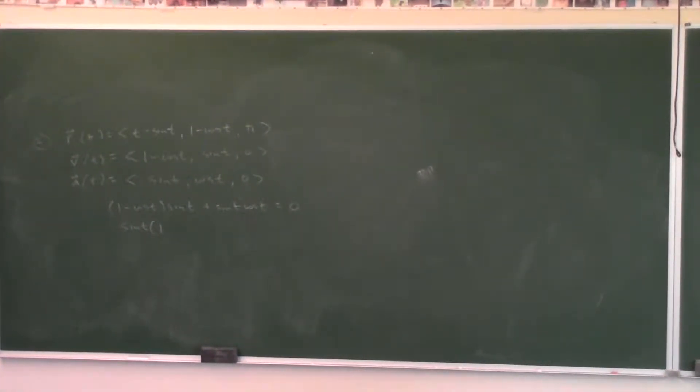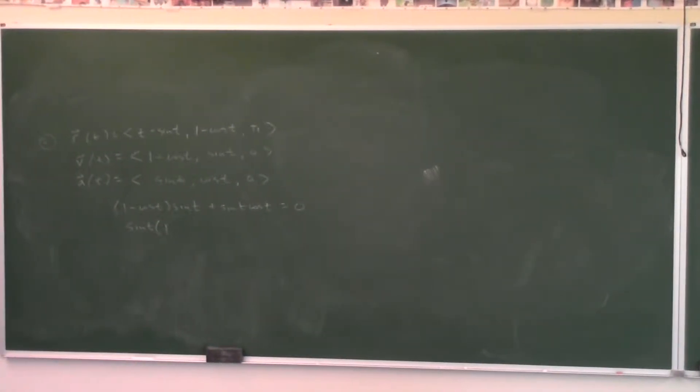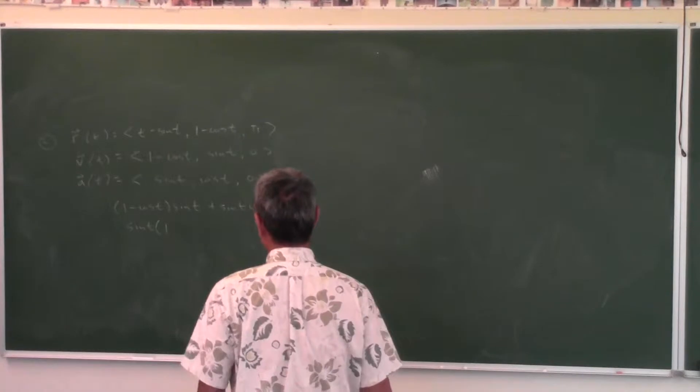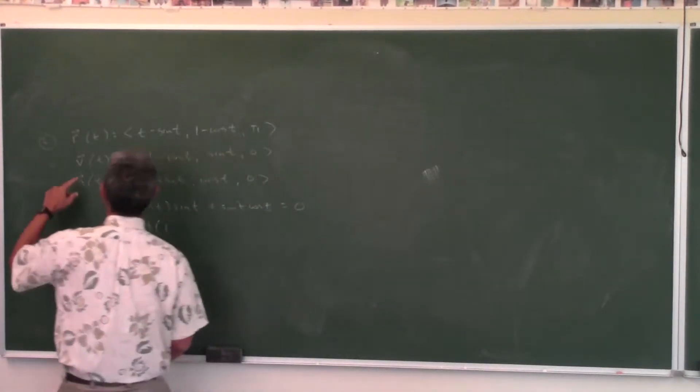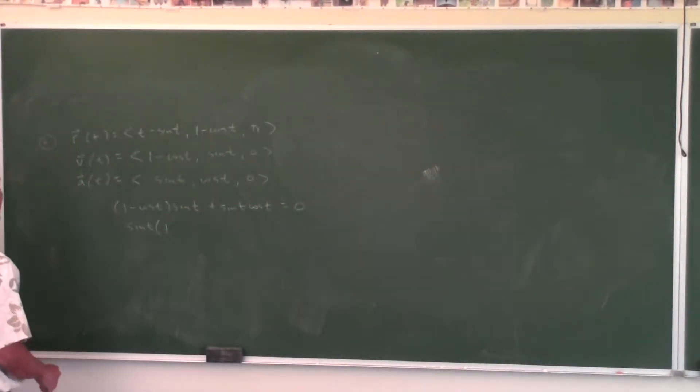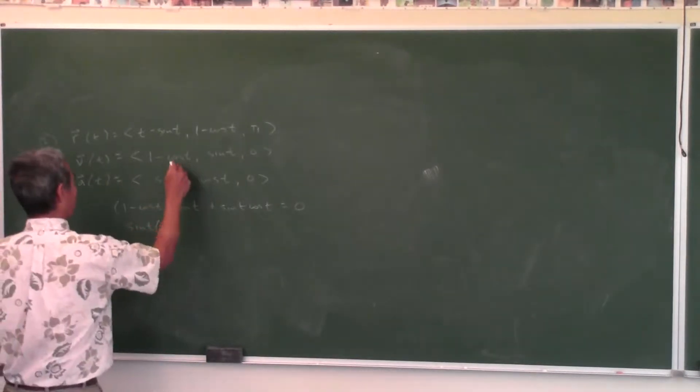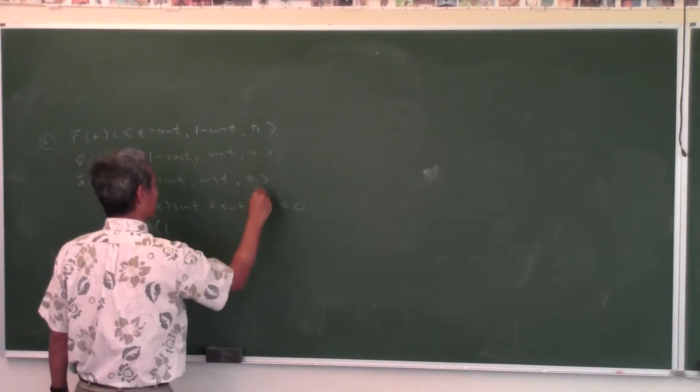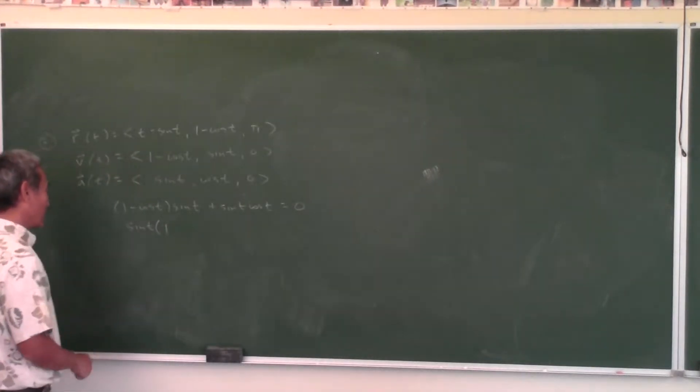So we are checking the correctness of the answers on problem number two. If two vectors are orthogonal, their dot product must be zero. So here is the velocity vector, here is the acceleration vector. If we take the dot product, which is to multiply the x components, multiply the y components, multiply the z components, you need to get zero.